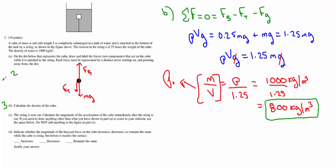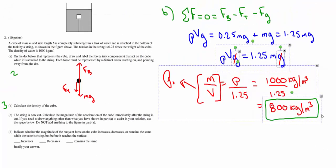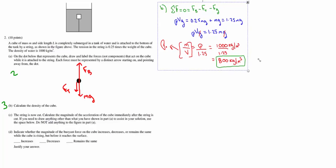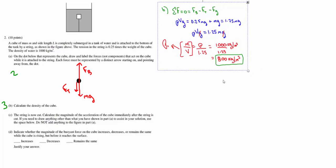Alright, now for part C, we're going to cut the string and we're basically going to let the object accelerate upward. We want to know what is this acceleration immediately after we cut the string. Now, we're still going to go ahead and utilize Newton's second law. However, this time the net force is not zero. The net force is something. So we're going to write MA.